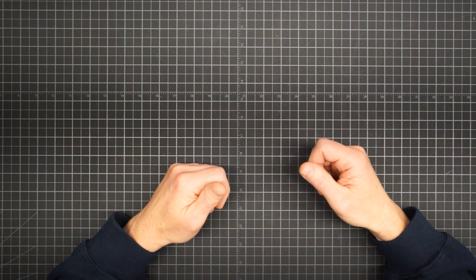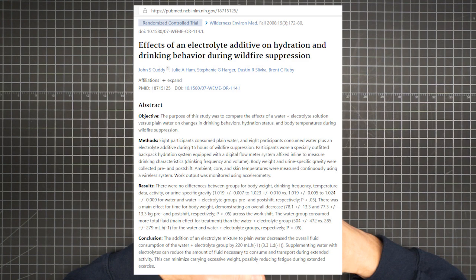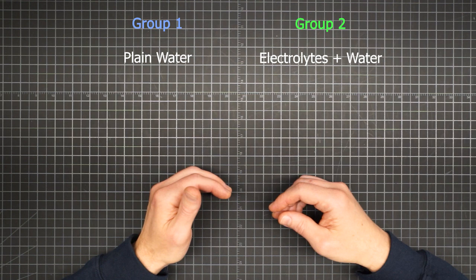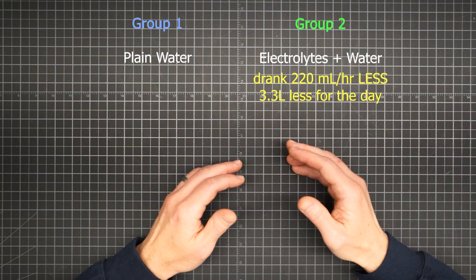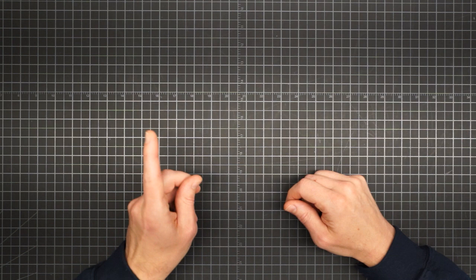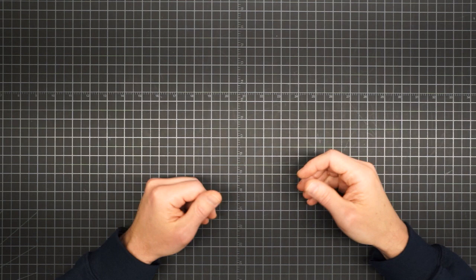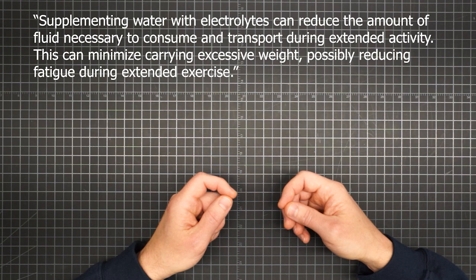I found a study to give you an idea of what the real world consequences might be. This randomized controlled trial published in the Journal of Wilderness and Environmental Medicine studied 16 firefighters engaged in wildfire suppression. Participants were split into two groups. One drank plain water over the course of 15 hours. The other consumed water plus an electrolyte additive. The electrolyte plus water group drank 220 milliliters per hour less than the plain water group. That's a total of 3.3 liters less for the day. And both groups had no difference in urine specific gravity. Think the color of your pee recall from part three. So at the end of the day, the electrolyters were able to achieve essentially the same hydration status for 3.3 liters less. That's over seven pounds of water. The study author's conclusion sums up the relevance for backpackers. Supplementing water with electrolytes can reduce the amount of fluid necessary to consume and transport during extended activity. And this can minimize carrying excessive weight, possibly reducing fatigue during extended exercise.